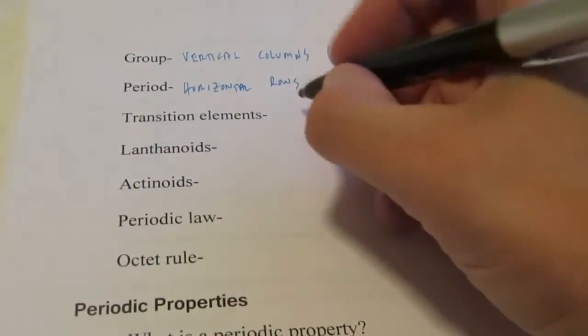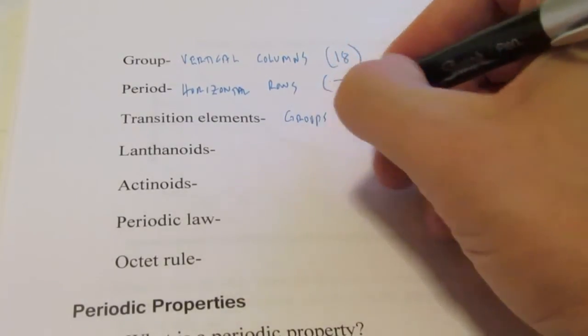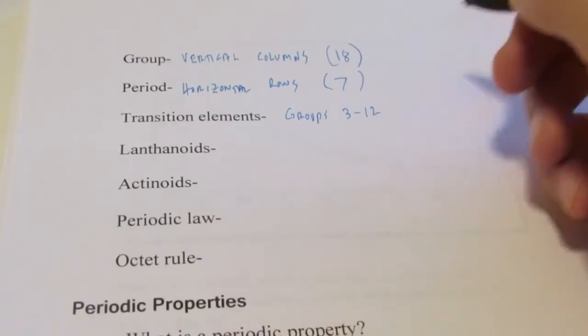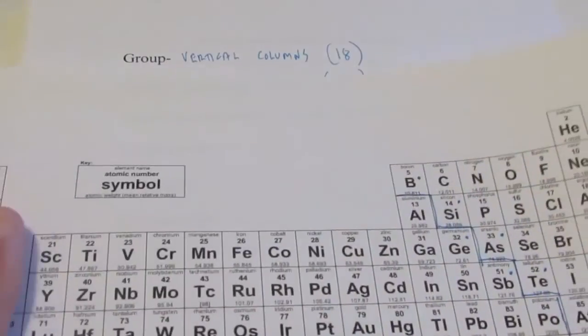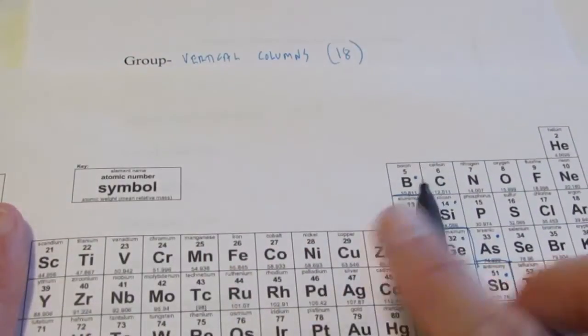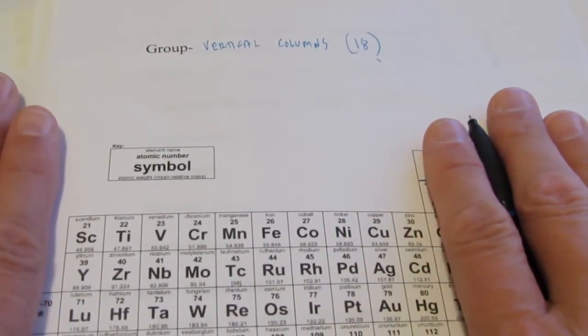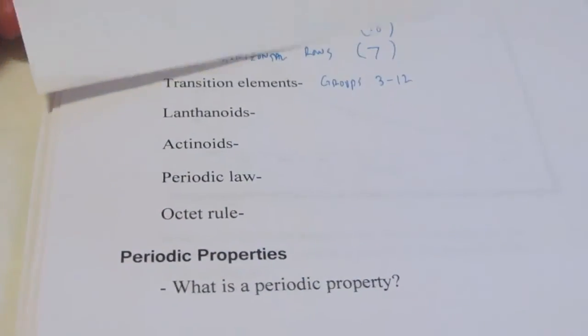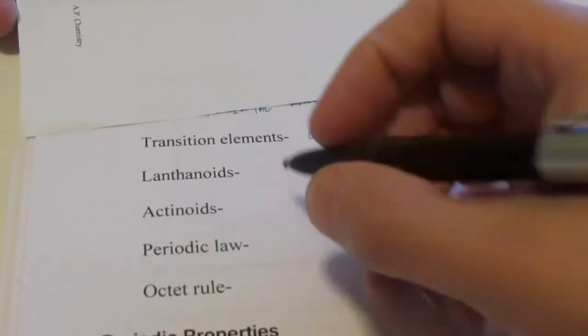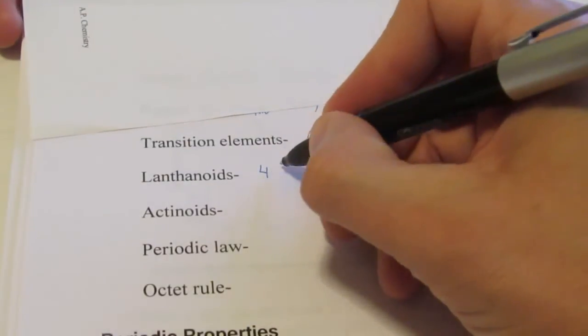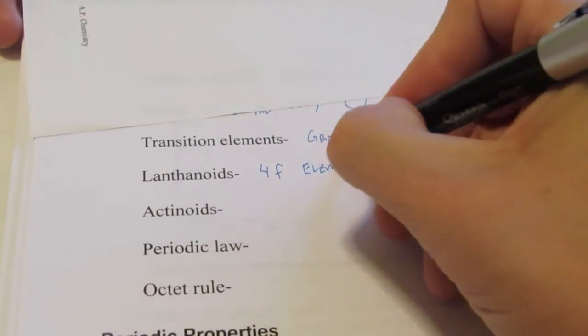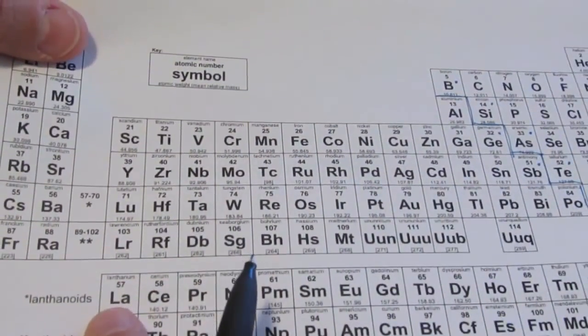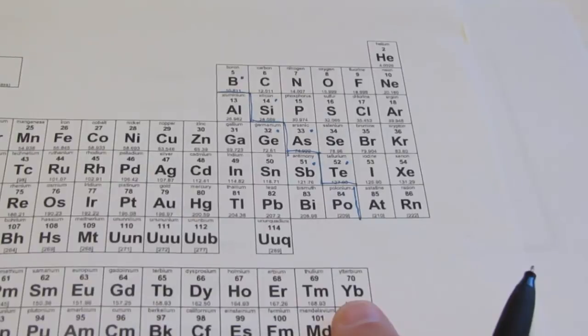The transition elements are groups 3 through 12. So if I go from scandium all the way through zinc, these groups in the middle are called the transition elements. And the lanthanoids, also called lanthanides, I like to call the 4F elements. That means that they are filling up the 4F sublevel. And they include elements atomic number 57, lanthanum, all the way through atomic number 70, ytterbium.